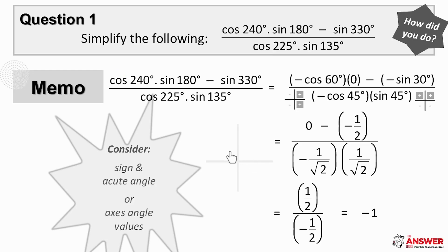Cos of 240. Cos in the third quad is negative because it is to the left of the y-axis and 240 is 180 plus 60. So the acute angle formed with the x-axis is 60 degrees and so this reduces to negative cos 60.